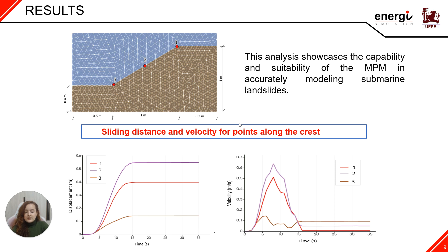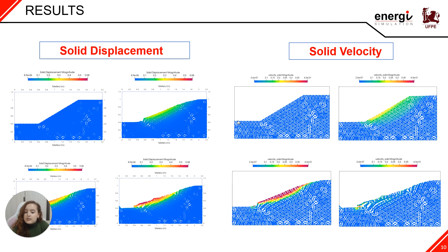First, we can observe the distance and the velocity of three specific points along the crest of the slope. The material point method allows us to observe the run-out process of the particles of the discretized body, which is exactly what we see here in these two graphs, including the displacement and the velocity over time. This first set of images shows us the solid displacement of the particles throughout the run-out process of the failure, as we can see in the red material points on the particles with larger displacement. In the second set of images, we can observe the velocity of the particles, noticing that they lose inertia due to the effective stress decrease, and after some calculation steps, they tend to stabilize once again.